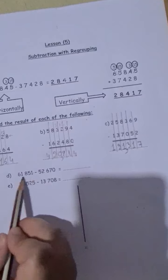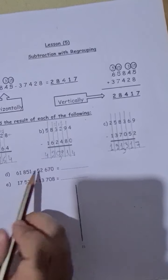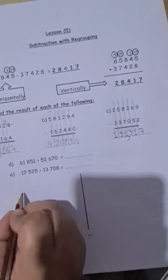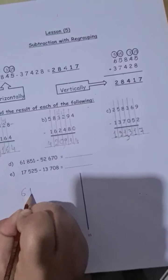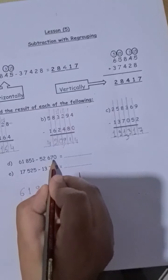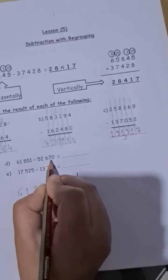Now, this question, when the numbers are written horizontally, I will put it in a workout. How can I do it? I'll put the first number, 61,851. Under the number, I'll start writing it from the ones.